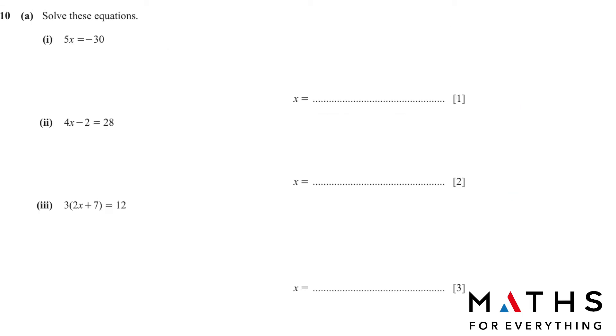Question number 10(a): Solve these equations. 5x = -30. 5x means 5 multiplied by x, so when we shift to the other side, the multiply turns into divide. So -30 ÷ 5 = -6. You can use your calculator for this. Next question: 4x - 2 = 28. The -2, when we shift to the other side, will become +2. 4x = 30. X = 30 ÷ 4 which will give you 7.5 as the answer.